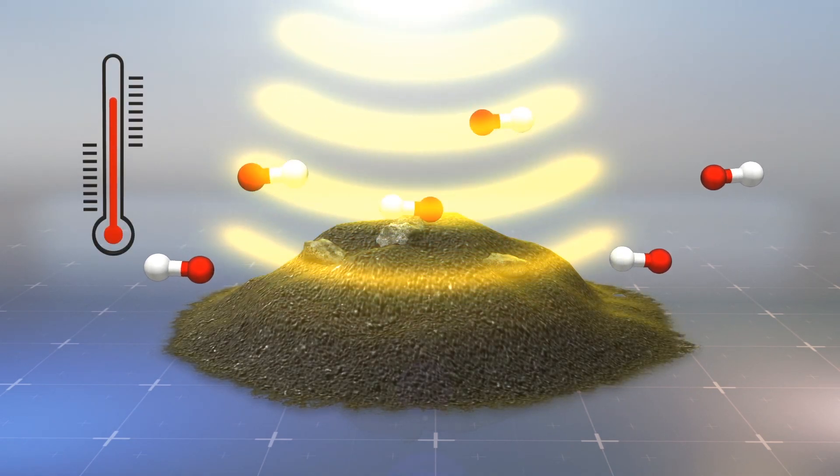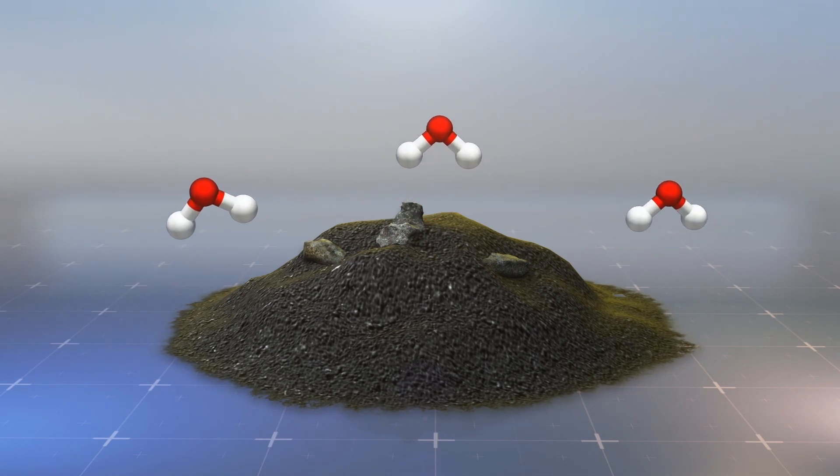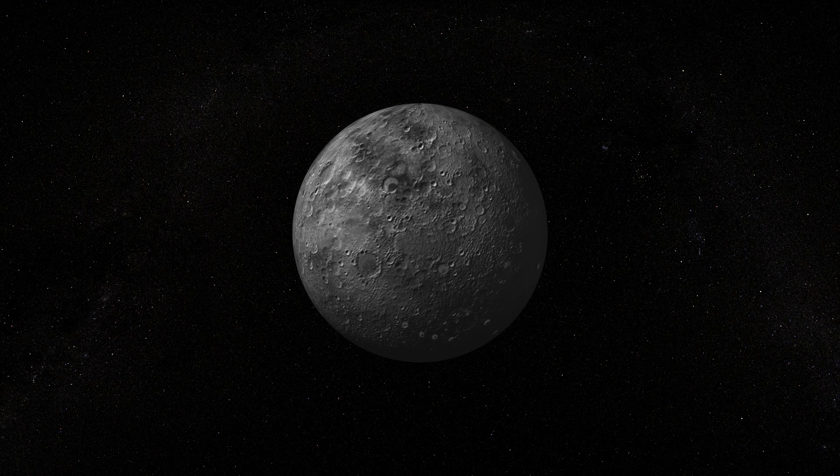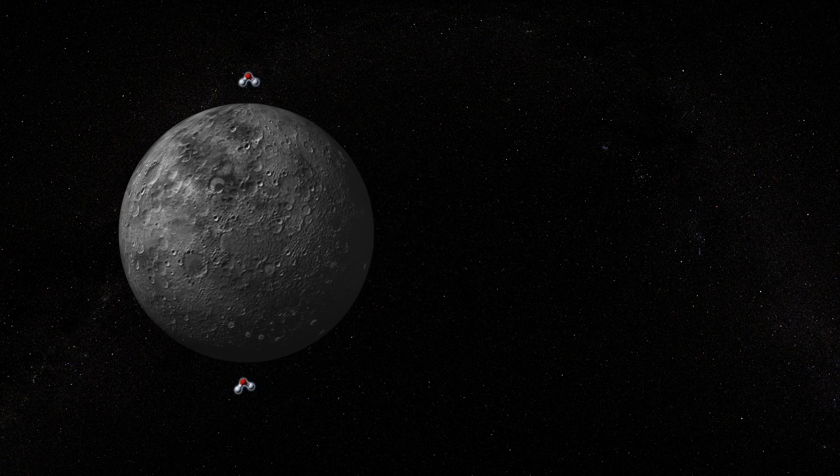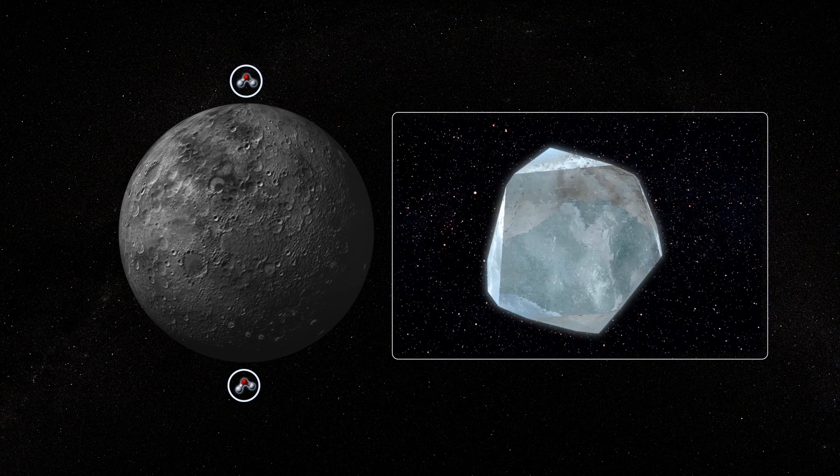After solar winds bombard the substance to 400 degrees Celsius, the oxygen and hydrogen break free to form water. The scientists say that according to their model, some of the water molecules would break down into their constituent atoms, but the remainder would escape and land on Mercury's poles. This creates ice deposits in the craters.